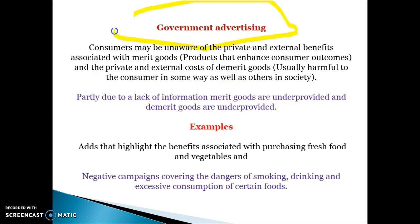Government advertising is a key tool to reduce asymmetric information. The government provides information about the private and external benefits of products — merit goods — with the intention of encouraging consumers to buy more of them. An advertisement highlighting the positive benefits of a product is an example of reducing asymmetric information. Examples include ads highlighting the benefits of eating fruit and vegetables, or negative campaigns on smoking or drinking to give more information about the negative impacts of those products.